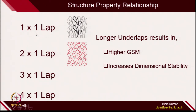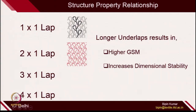If you change the lapping — 1 cross 1 means 1 pitch of underlap and 1 pitch of overlap; 2 cross 1 means 2 pitch of underlap, 1 pitch of overlap; 3 cross 1 means 3 underlap, 1 overlap. If you have longer underlap, there will be more floating sinker loops across the columns, resulting in higher GSM of the fabrics. Also, longer underlap results in a more dimensionally stable structure.